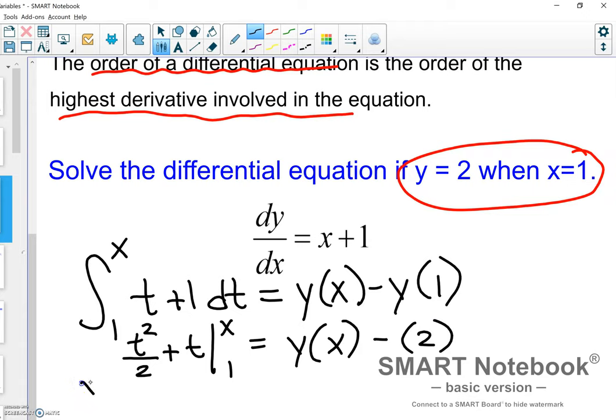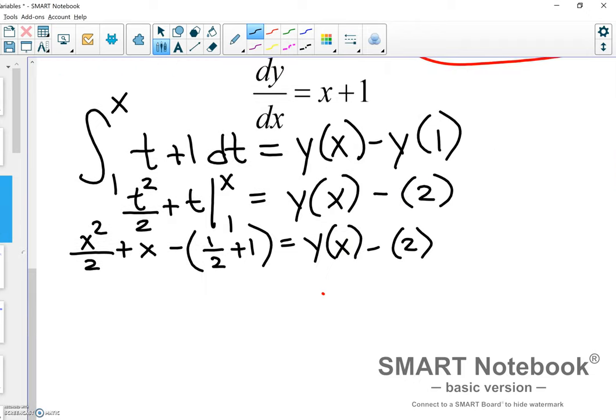Now, continuing to solve this, we would have t squared over 2 plus t evaluated from x to 1 is equal to y of x minus 2, since that is the given information. And then, now we would evaluate this using x, x squared over 2 plus x, subtracting that from 1 half plus 1. And this would be equal to y of x minus 2. Remember, our whole goal here is to write an equation, a unique solution for this differential equation. So, now I have x squared over 2 plus x minus...